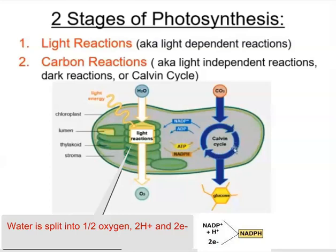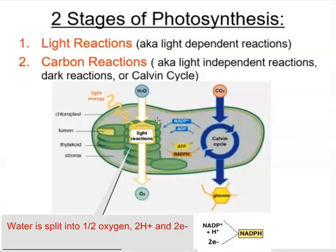Those two high-energy molecules — ATP and NADPH — are used to power the Calvin cycle. The Calvin cycle takes place within the stroma of the chloroplast. Carbon dioxide diffuses in, and the carbon from CO₂ gets incorporated into the glucose molecule. Since glucose has six carbon atoms, we need six carbon dioxide molecules to produce one glucose after the cycle is complete.